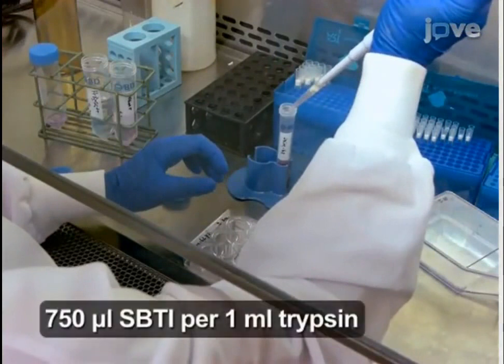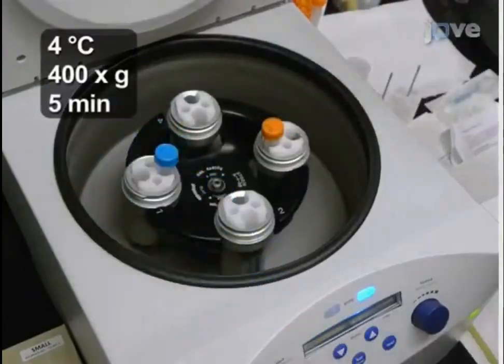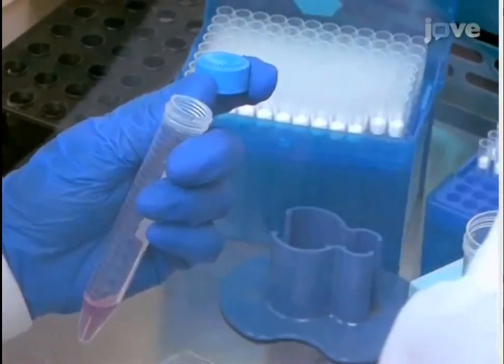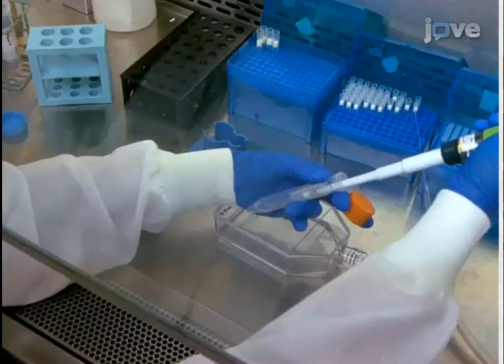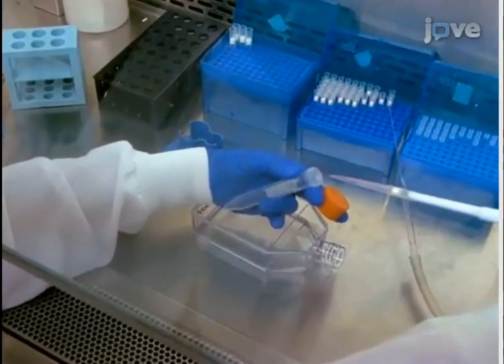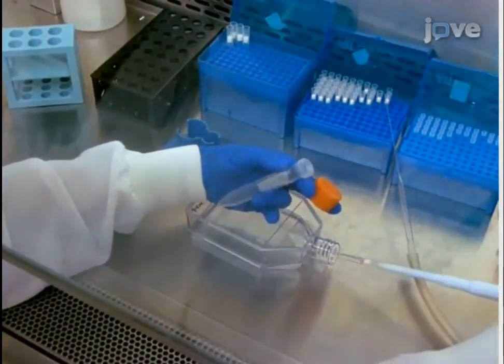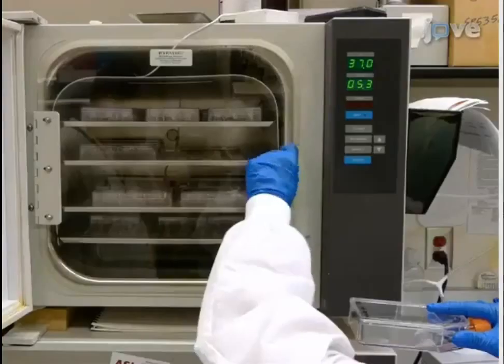Centrifuge to pellet. After aspirating the supernatant, resuspend in one milliliter BEGM+ media and vortex the tube. Expand the cells in a T25 or T75 flask depending on pellet size. A T75 flask is used in this demonstration. Add five milliliters BEGM+ media to the flask, and then add the cell suspension to the flask. Transfer the flask to the tissue culture incubator.